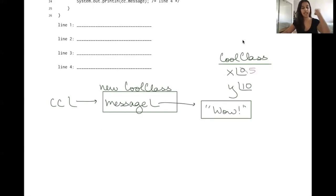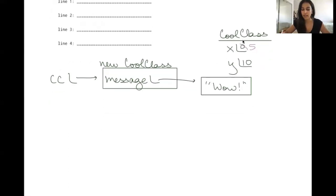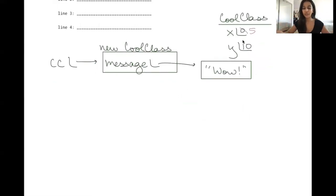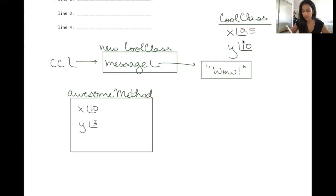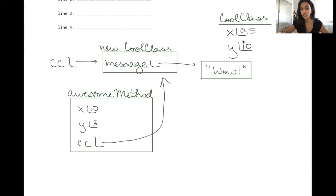We move on to the next line: cc.awesomeMethod. We open a new frame for awesomeMethod by drawing a box with the method name on top. The three parameters passed in are 10, 3, and cc — so we have local x = 10, local y = 3, and then cc, passing in the cc object we instantiated earlier, with a pointer to that object.